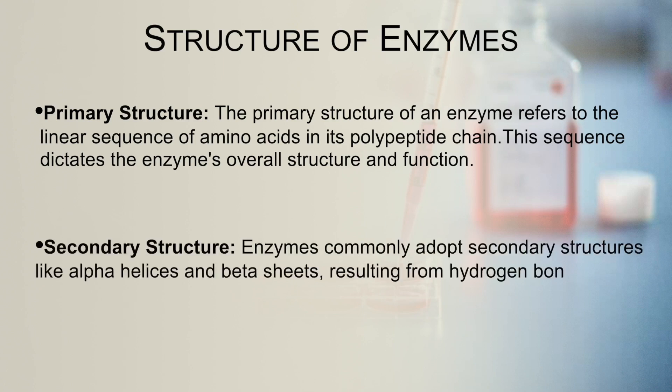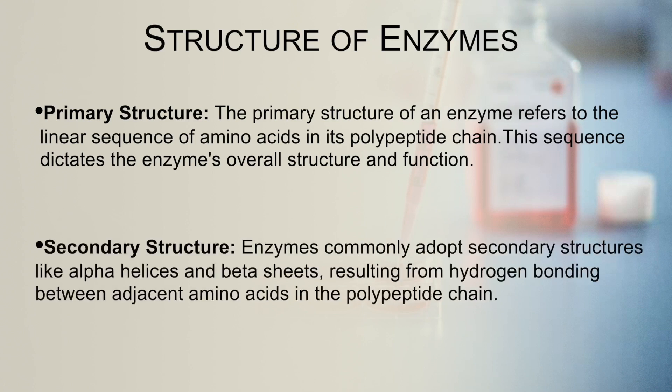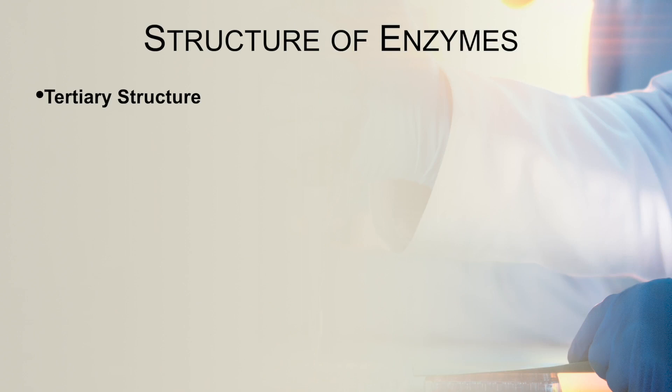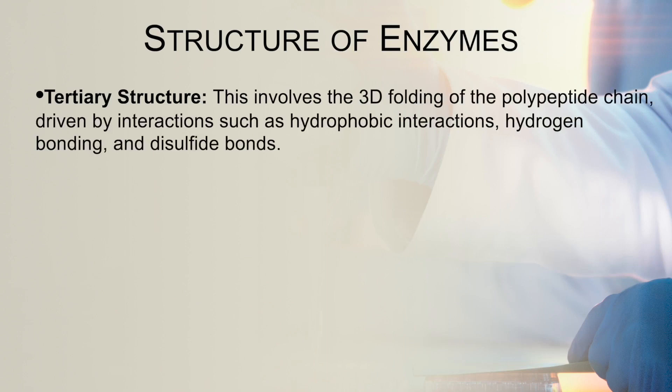Next is secondary structure. Enzymes commonly adopt secondary structures like alpha helices and beta sheets, which result from hydrogen bonding between adjacent amino acids present in the polypeptide chain. Then there is tertiary structure, which involves the three-dimensional folding of the polypeptide chain driven by interactions such as hydrophobic interactions, hydrogen bonding, and disulfide bonds.